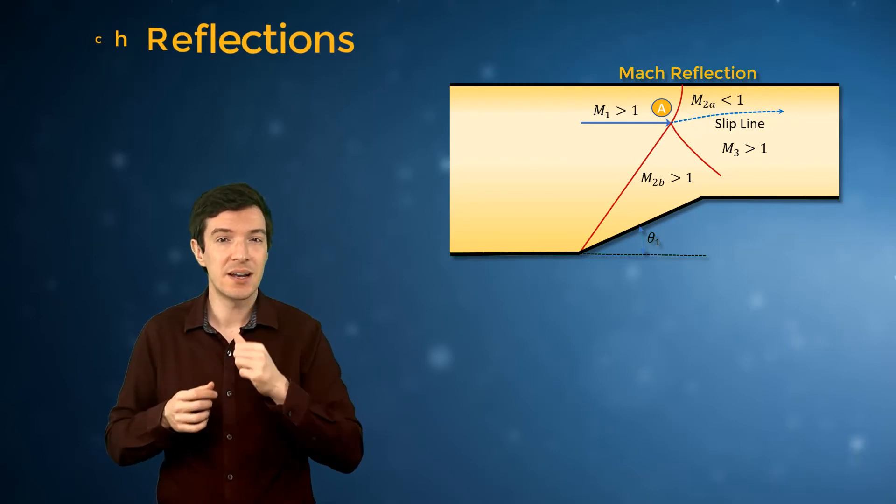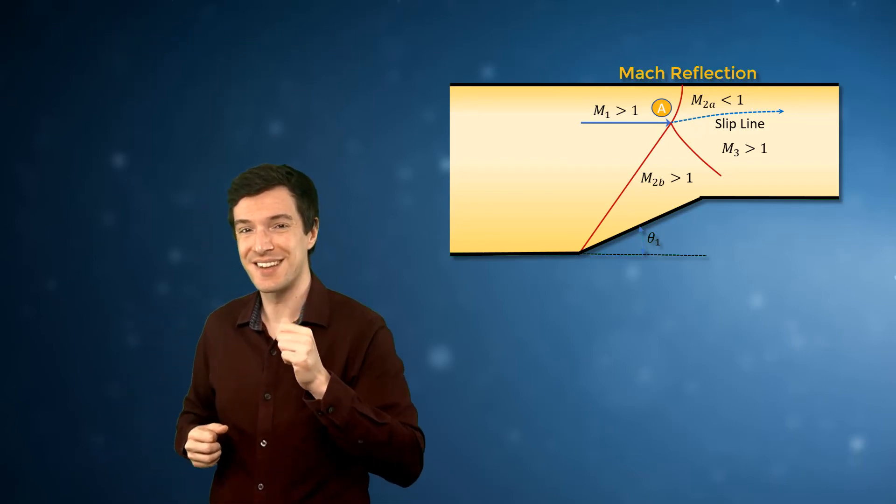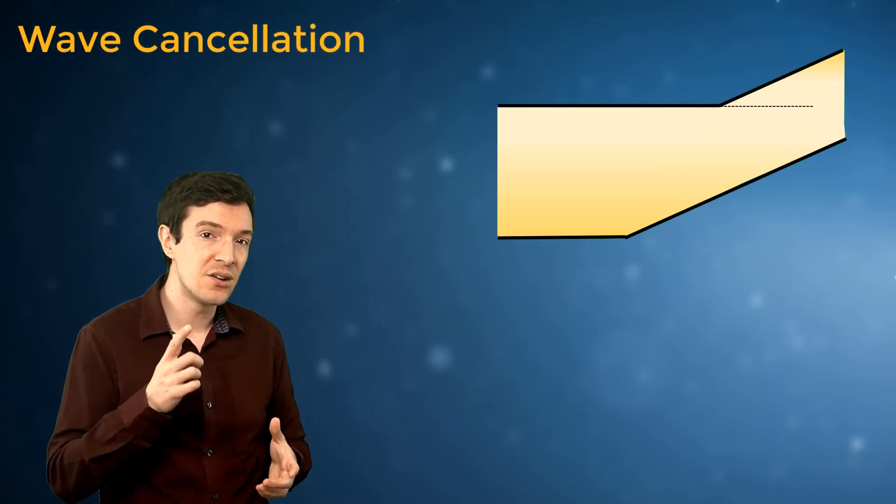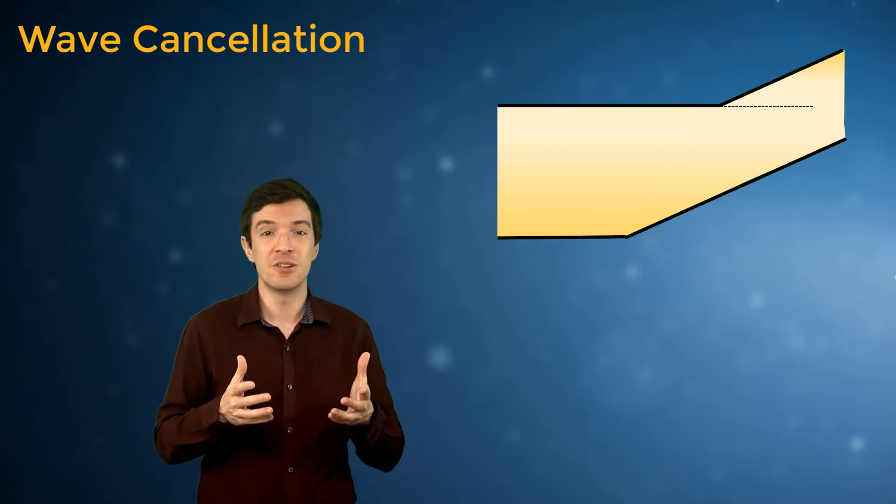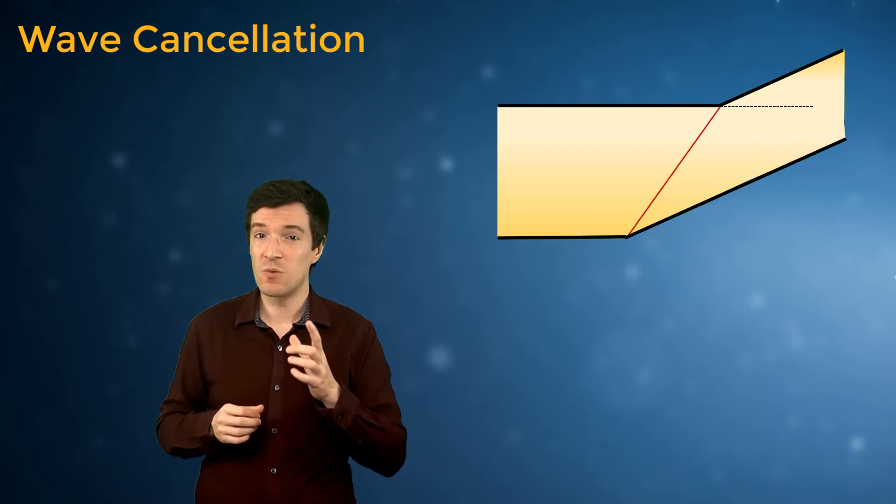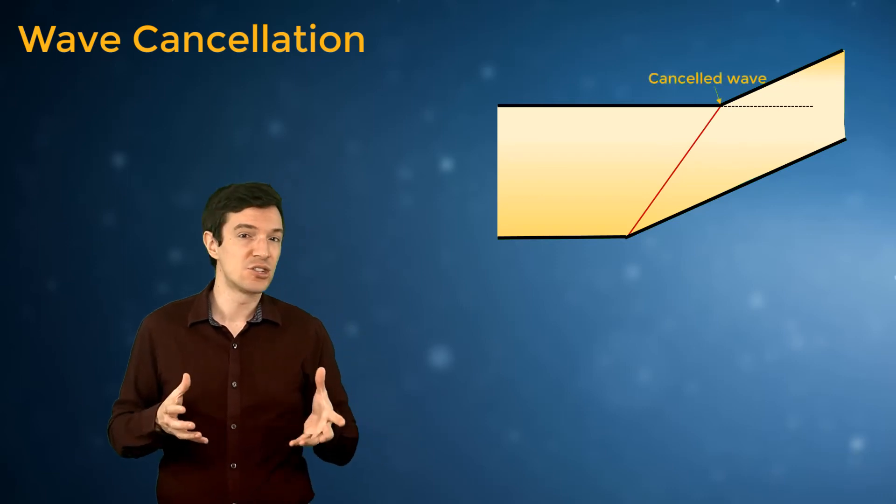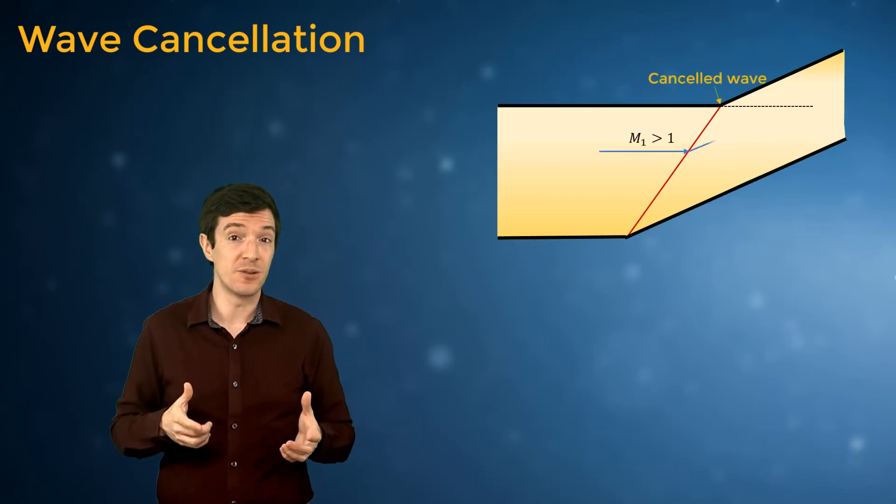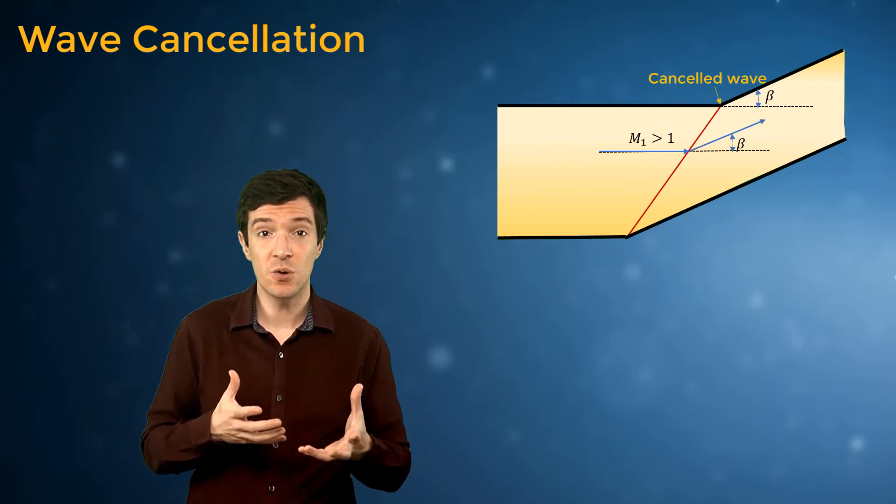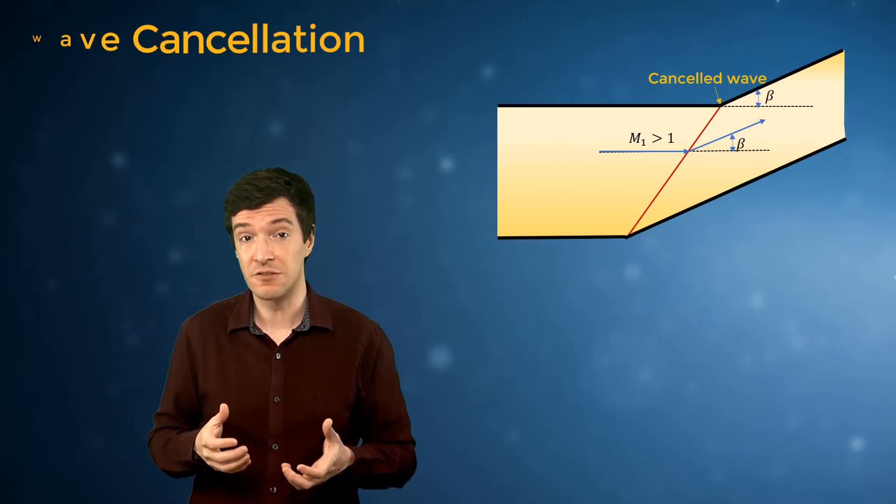Let's now analyze another peculiar case. If the flow behind the oblique shock does not have to be turned in order to be parallel to the wall, then we can have a wave cancellation. The shock will not reflect at all on the wall. This can be a useful consideration to remove shock waves in supersonic channel flows.